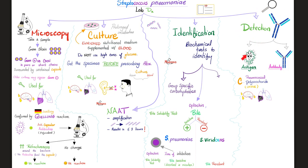Last, you can detect the antigen. Don't forget the pneumococcal C polysaccharide, which is responsible for C-reactive protein production by the liver. That's why it's called CRP or C-reactive protein — this may be helpful in cases of meningitis or pneumonia.